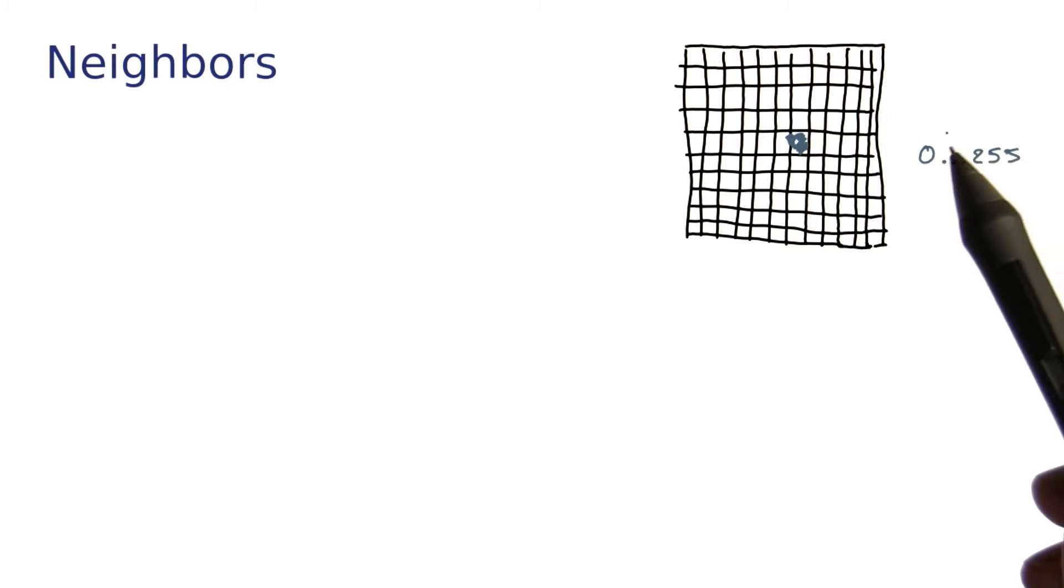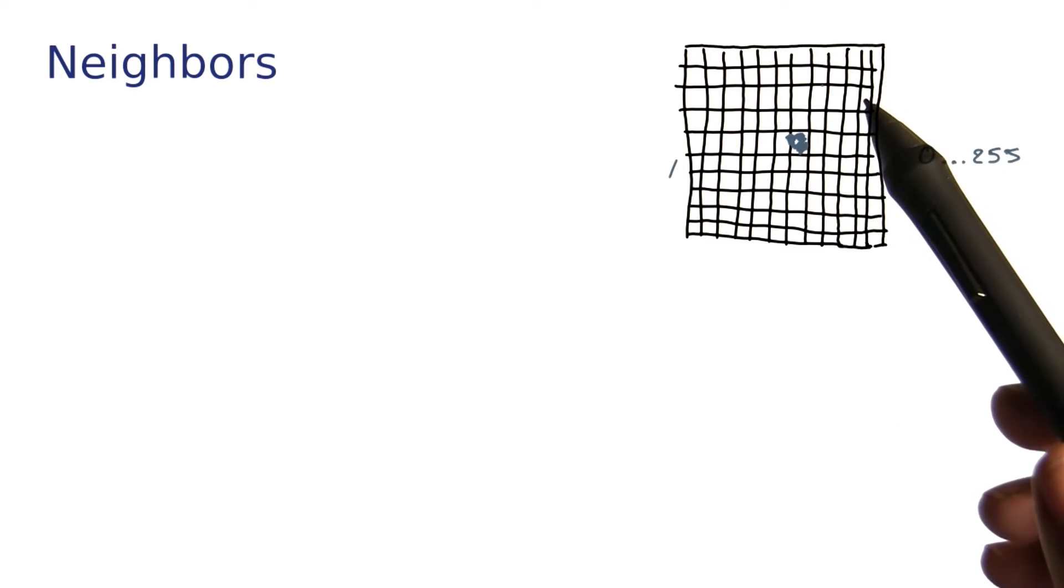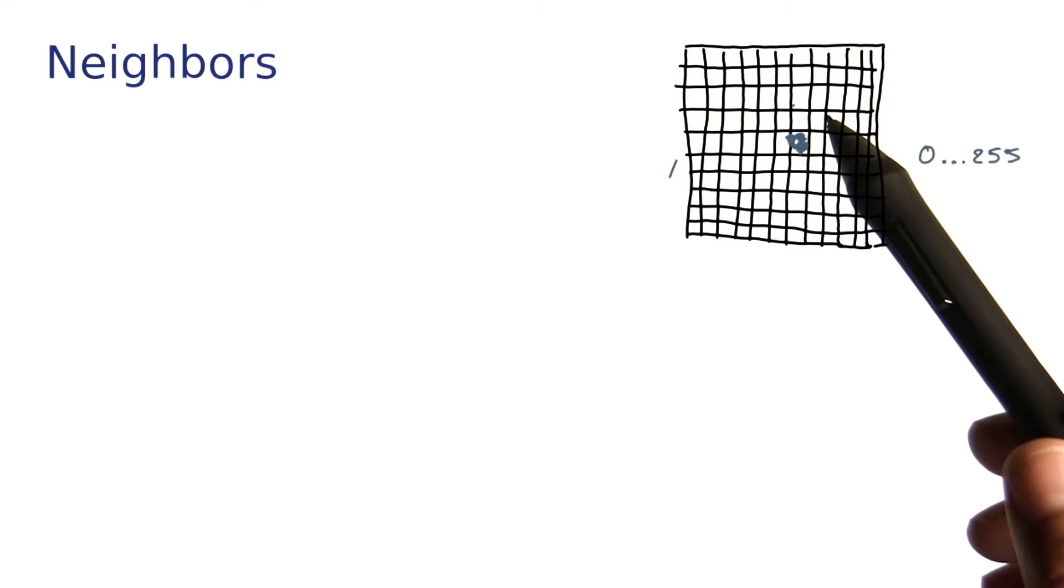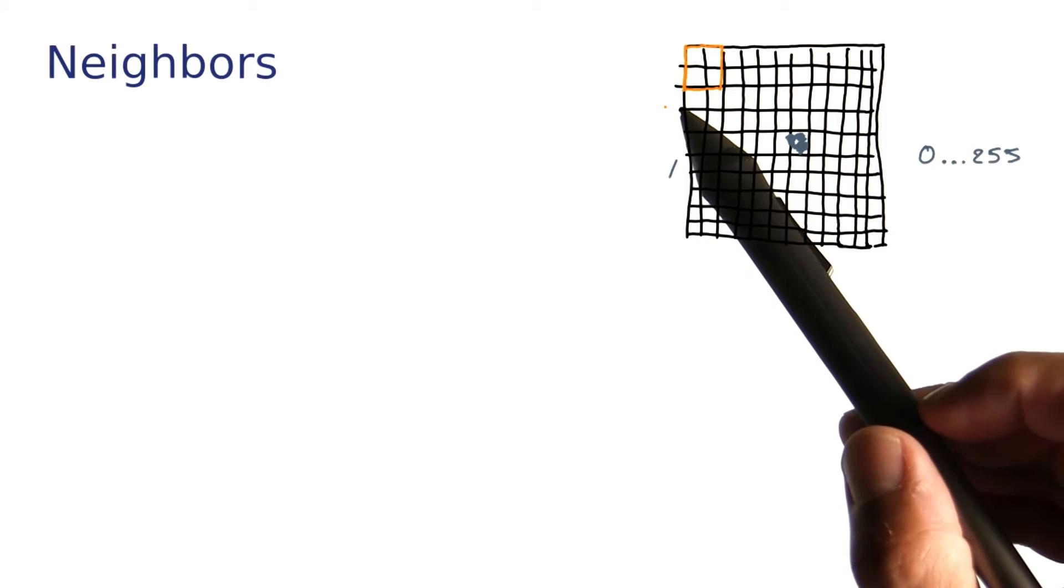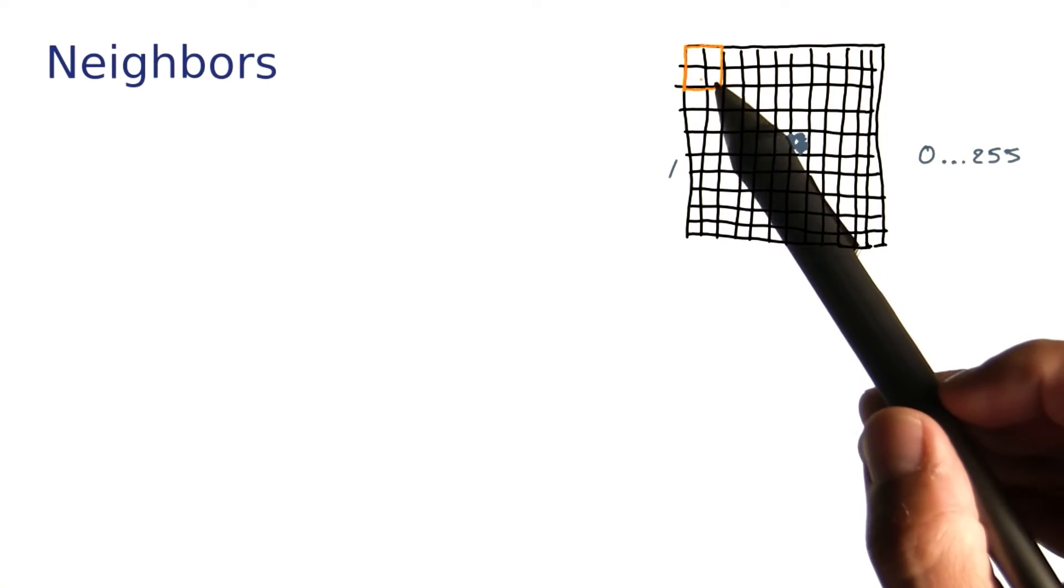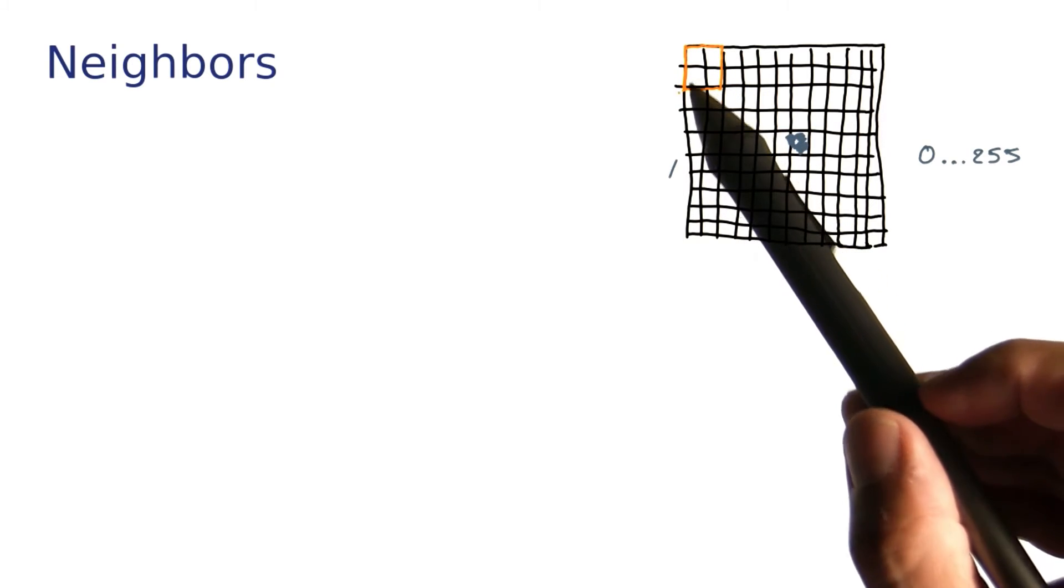Now, here's the problem that we want to solve. We have a photo, which is represented as a two-dimensional array of lots of gray levels, and now we want to make it a little blockier. When I have groups of four neighbors like this, I want to compute the average color, or rather the average gray level of these four pixels and color them all in that color.